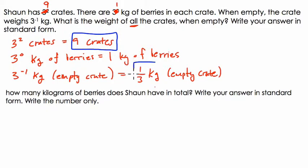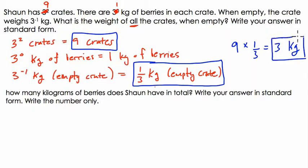And each of the crates weigh a third of a kilogram. So 9 crates at each of a third of a kilogram, what is the total weight of that? Well, it's just going to be 9 times a third, right? 9 crates times a third of a kilogram per crate. So that's 3. Altogether, 3 kilograms. And that is the weight of all the crates added together.